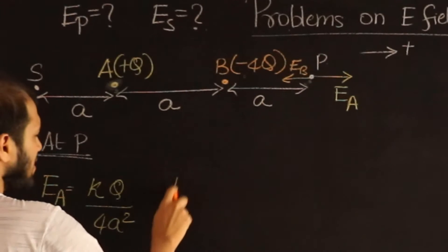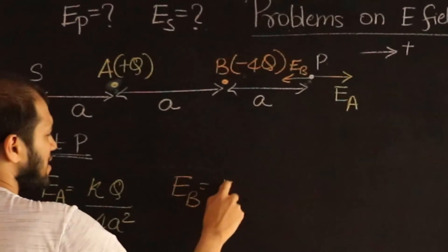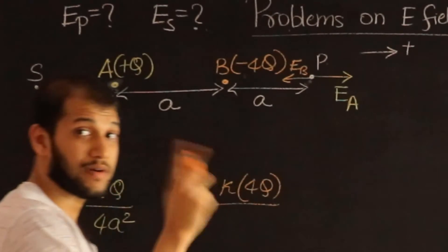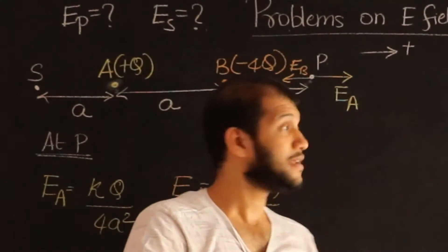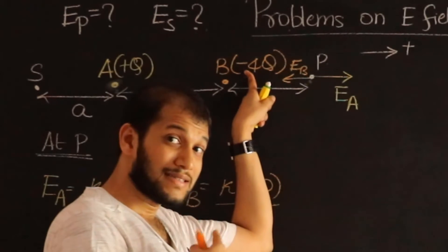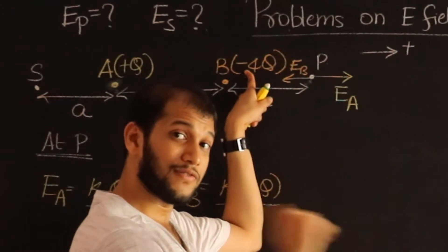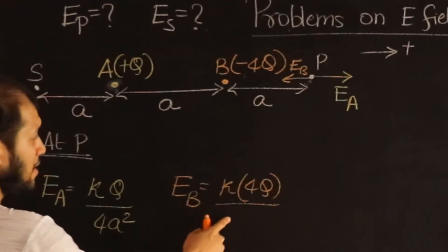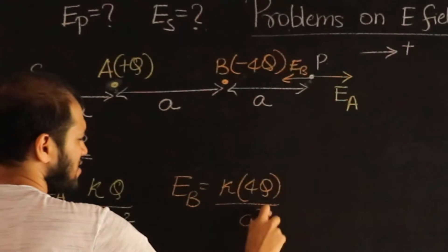And similarly, electric field due to point B is going to be k into q, I only take care of the magnitude. Remember, I'm calculating the magnitude of the electric field. The sign is only there to tell me what direction the field is. So I don't have to put the sign over here. Divide by the distance square, which is a square.